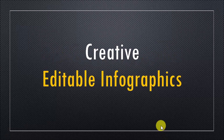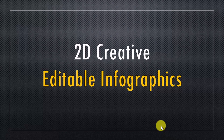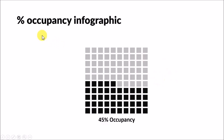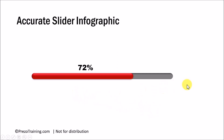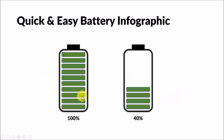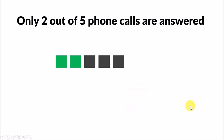First, we will learn how to build creative editable infographics — both the 2D and 3D versions. The 2D version includes a simple percentage occupancy chart you might have seen in financial newspapers, created using just auto shapes. Next is an accurate slider infographic — made using rounded rectangles with a cool trick to ensure it accurately represents percentage completion. Then there is a quick and easy battery infographic using the metaphor of a battery to represent percentage energy. Then I show a simple trick to take these editable infographics to the next level by replacing shapes with meaningful icons.